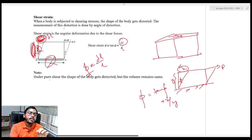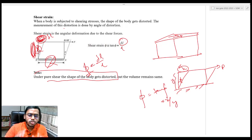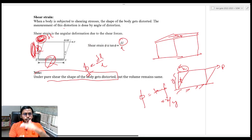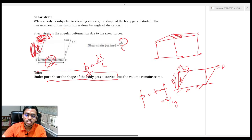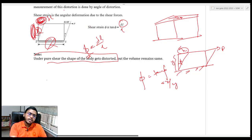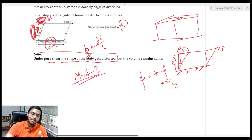One more important point: under pure shear, the shape of the body gets distorted but the volume does not change. This is a direct exam bit for state PSC. Under pure shear — meaning only shear force and no other direct normal force — the body gets distorted but the volume remains the same. In the next module, I will teach the concept of proof stress, resilience — questions can come directly for your ESE and state PSC exams. See you in module number 3 of Strength of Materials. Have a nice day. Subscribe to this channel.